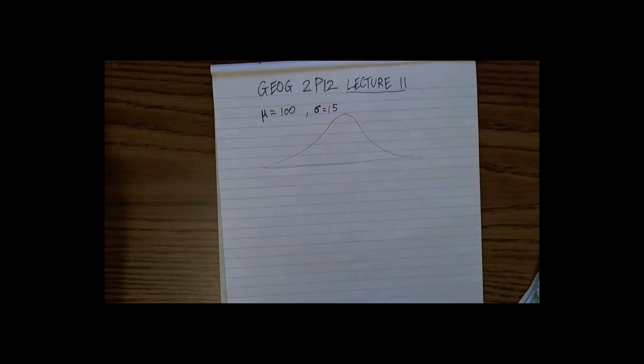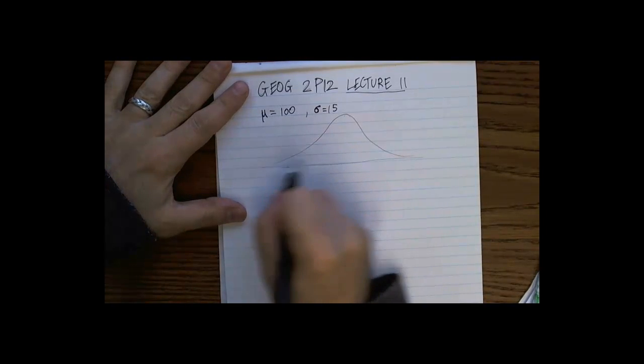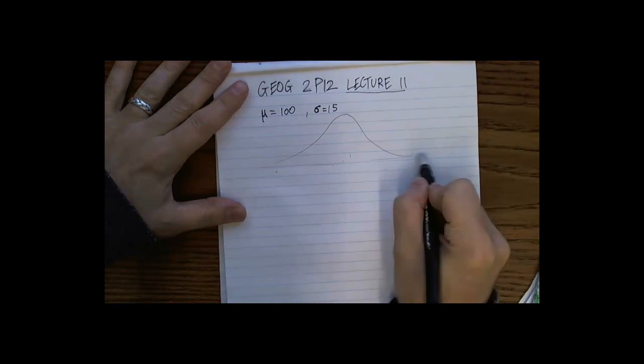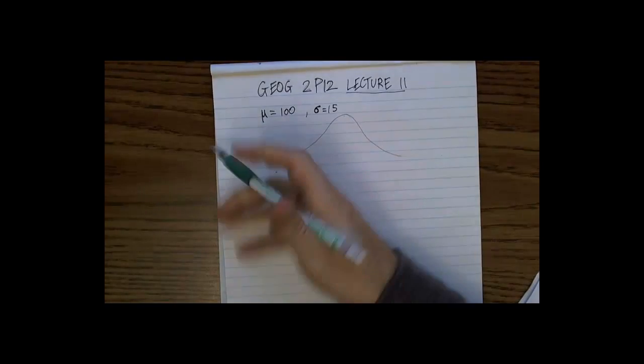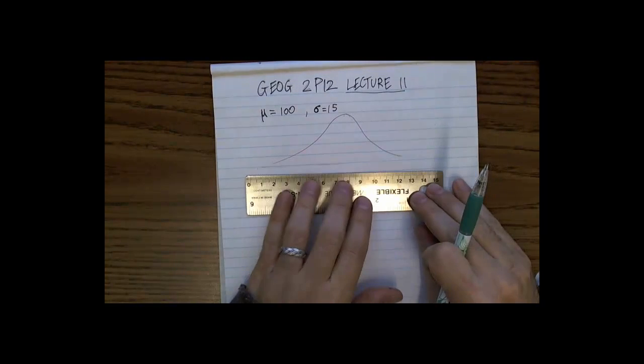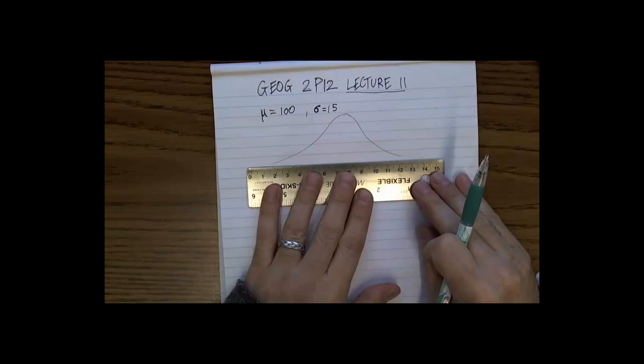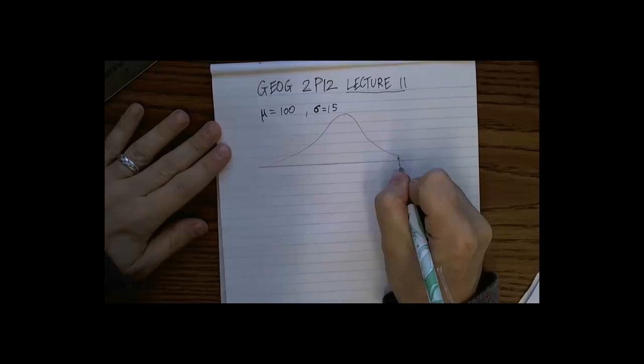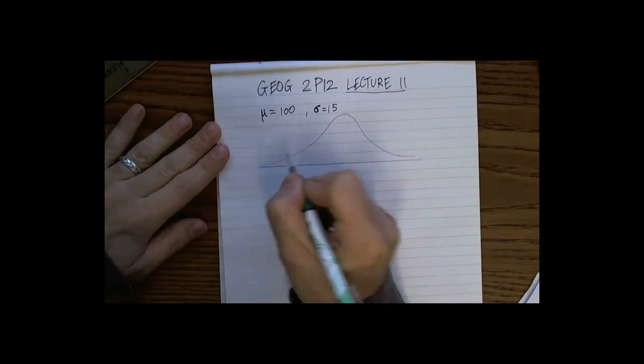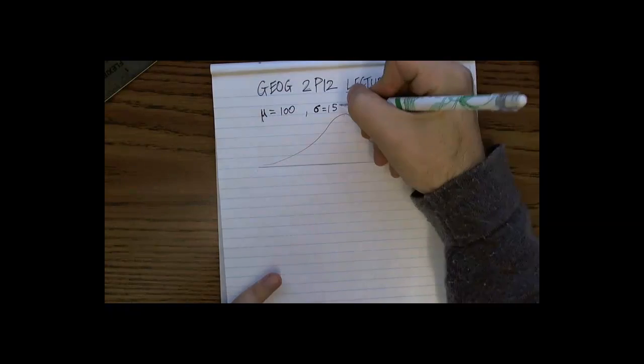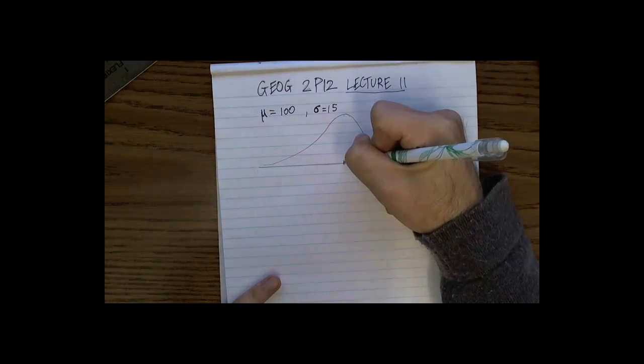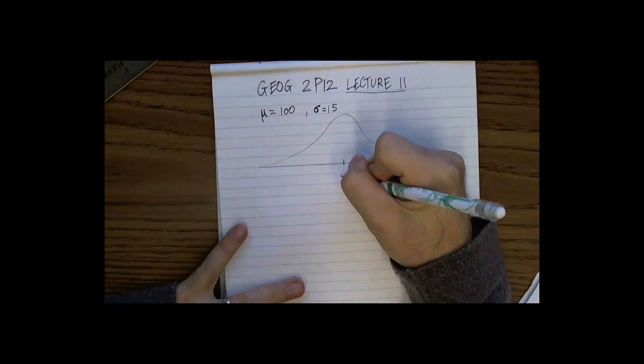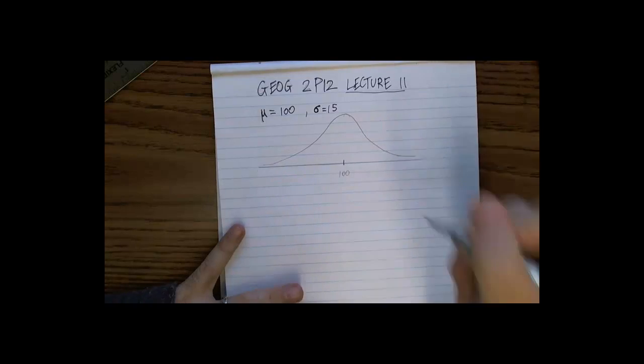And then let me go ahead and sketch out a crude normal distribution. And that didn't come out so well, so let me fix this a little bit. So pretend that this is a normal distribution. So we have our bell-shaped curve, right?